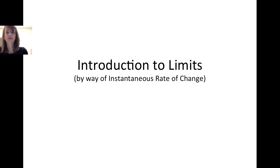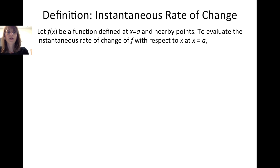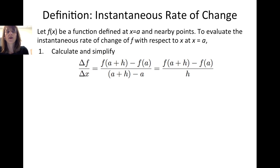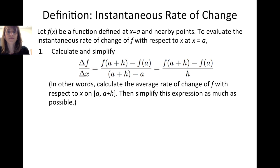Let's look at the definition of instantaneous rate of change. Let f of x be a function defined at x equals a and at nearby points. To evaluate the instantaneous rate of change of f with respect to x at x equals a, we need to complete a two-step process. First, we calculate and simplify the change in f divided by the change in x, which is f evaluated at a plus h minus f evaluated at a, divided by a plus h minus a. In other words, we calculate the average rate of change of f with respect to x on the closed interval from a to a plus h, and then simplify this expression as much as possible.